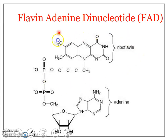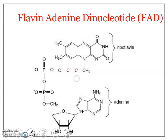Why is the flavin mononucleotide or flavin ribitol monophosphate considered a pseudonucleotide? The first reason is that instead of a pentose sugar, it has a ribitol part. It does not have a ribose sugar; instead, it has an alcohol which is ribitol, where each carbon is attached to a single hydrogen and a hydroxyl group. The second reason is that the flavin part is not a nitrogenous base, unlike adenine in the AMP portion.